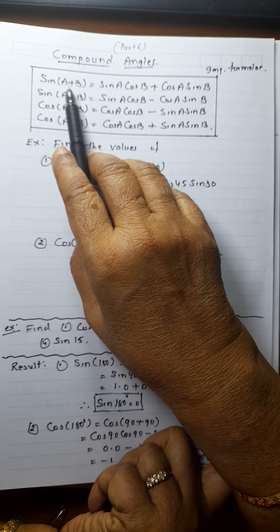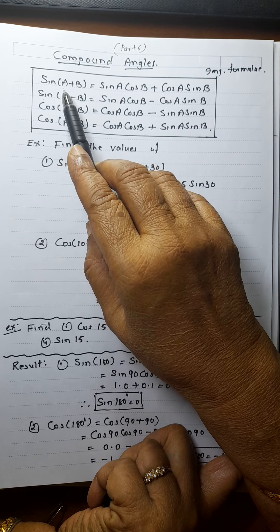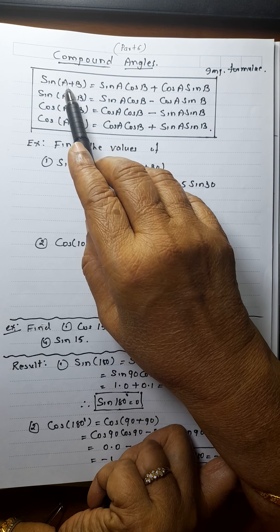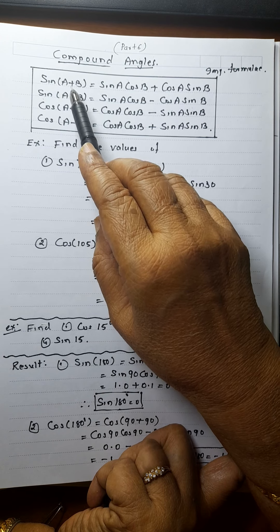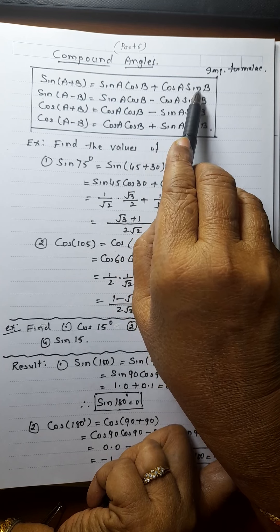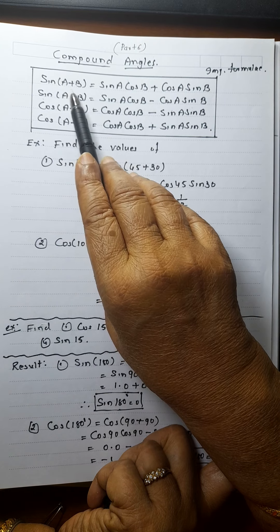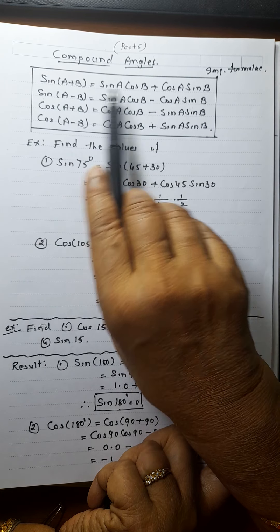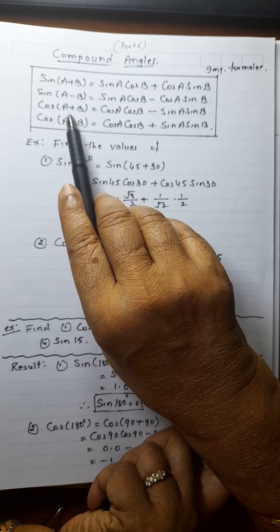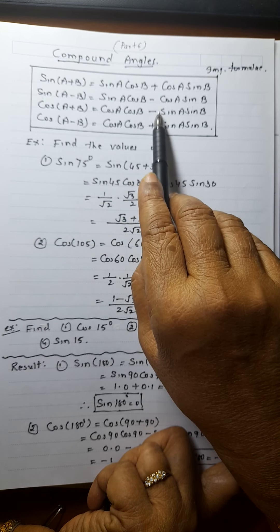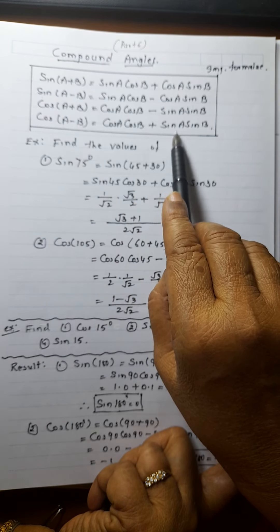Very important formulas. By using these four formulas only, I will derive some more formulas. Sin of (A+B) — don't write it as sin A plus sin B; don't remove the bracket like that, it is wrong. The formula is sin A cos B plus cos A sin B. Sin of (A−B) equals sin A cos B minus cos A sin B. Cos of (A+B) equals cos A cos B minus sin A sin B. And cos of (A−B) is cos A cos B plus sin A sin B.